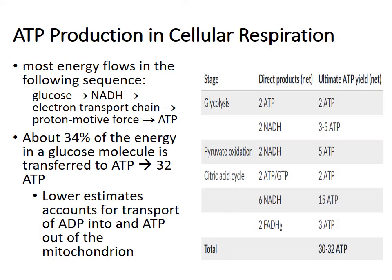Regarding total ATP in cellular respiration — if you're in a class that uses a higher number, use that for that test. Our textbook gives a lower estimate because it accounts for the energy cost of transporting ADP into and ATP out of the mitochondrion. Most of the energy flows in the sequence: glucose → NADH → electron transport chain → proton motive force → ATP.